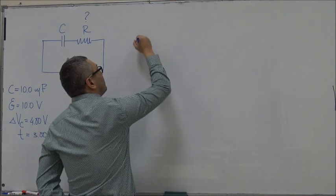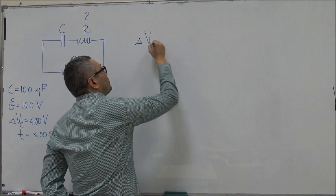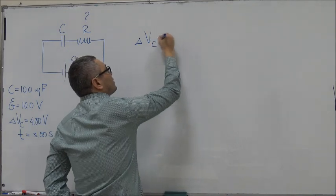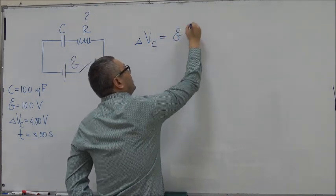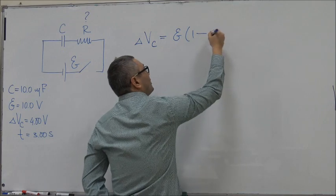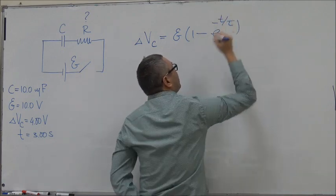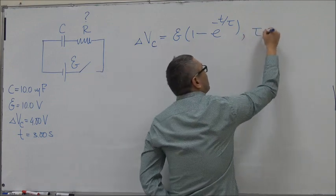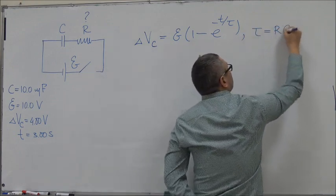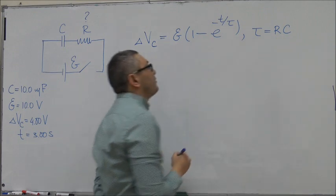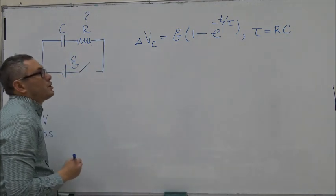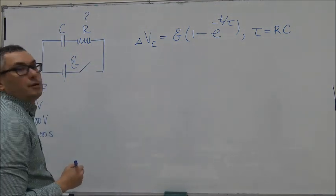As we know, the voltage across the capacitor is equal to the EMF times (1 - e^(-t/τ)), where tau is the time constant of the RC circuit and is equal to RC. So starting from this equation we can work out the value of R.